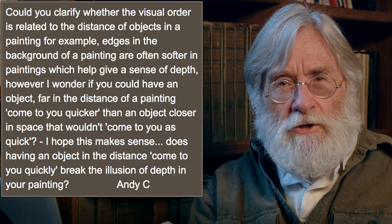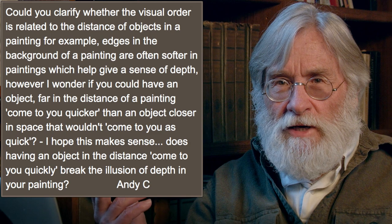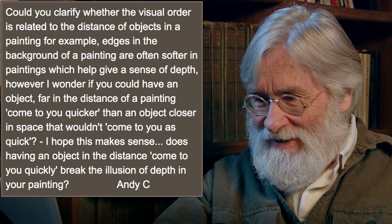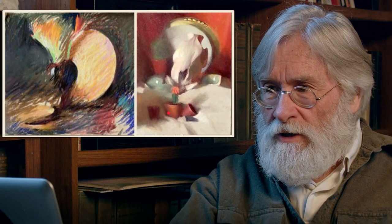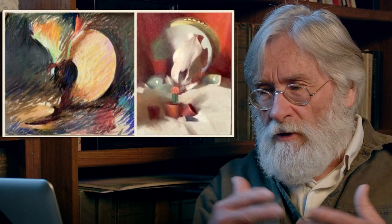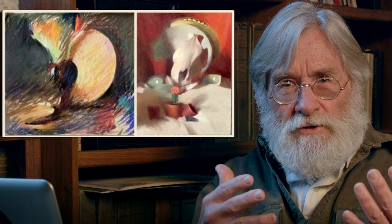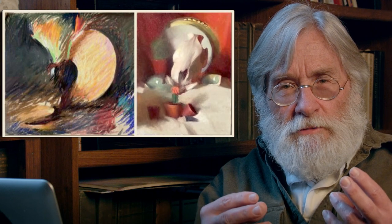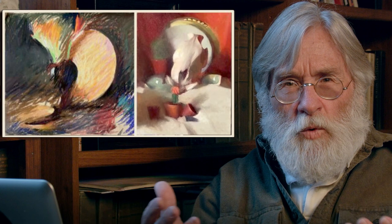Does having an object in the distance come to you quickly break the illusion of depth? Of course not — you're looking at me right now: those things are happening and my nose is still out in front of my collar. Here you can see a bunch of pots in the foreground that don't have much projectivity, yet a nose way back there comes out in front of them. Those are just words: they're effects. We're just doing value relationships and chroma relationships — effect relationships.